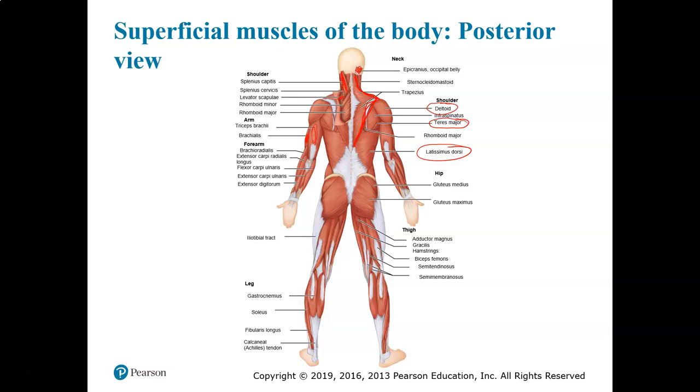So the latissimus dorsi and the pectoralis major are going to be antagonists to each other. Latissimus dorsi will cause extension. Pectoralis major will cause flexion of your entire arm. So you move your arm forward to the front, pointing straight ahead. That's going to be flexion. So that will be your pectoralis muscles. And then if you move your arm back straight down at your sides or even back behind you to the posterior area, that's going to be the latissimus dorsi. That will be called extension. And you've got some flexors and extensors. Again, in the forearm, you have the hamstrings, which consist of the biceps femoris, the semitendinosus, and the semimembranosus.